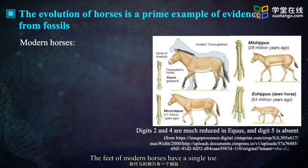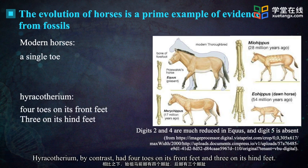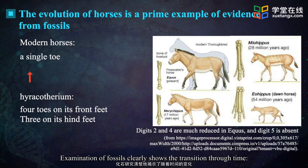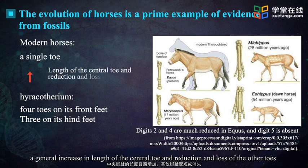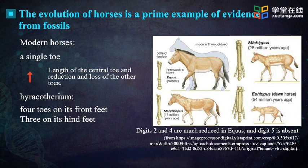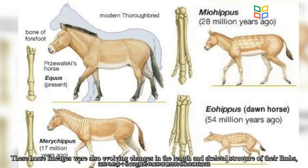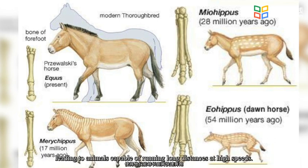The feet of modern horses have a single toe. Hyracotherium, by contrast, had four toes on its front feet and three on its hind feet. Examination of fossils clearly shows the transition through time — a general increase in length of the central toe and reduction and loss of the other toes. These horse lineages were also evolving changes in the length and skeletal structures of their hind limbs, leading to animals capable of running long distances at high speeds.